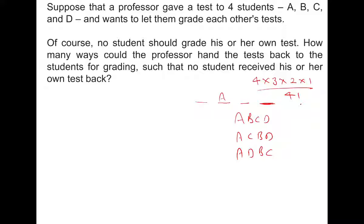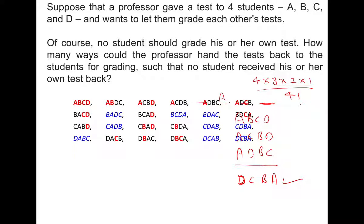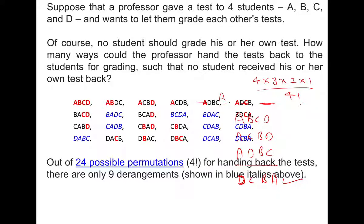For example, if I choose D, C, B, A — that means the test has been given to D, then C, then B, then A — none of them receive the same test, so this is an acceptable answer. If you try all 24 permutations, those highlighted in blue are the acceptable solutions. This problem is known as the problem of derangement, which we will discuss in later classes.